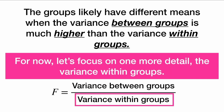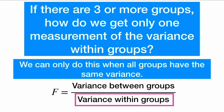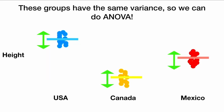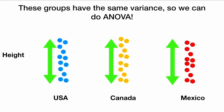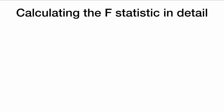Let's focus on one more detail: the variance within the groups. If there are three or more groups, how do we get only one measurement of the variance within groups? We can only do this when all groups have the same variance — so this is an assumption of ANOVA. These groups all have the same variance, so we can do ANOVA. However, if Canada has a very low variance, Mexico has a very high variance, and the USA is somewhere in between, these groups don't have the same variance and we cannot do ANOVA.